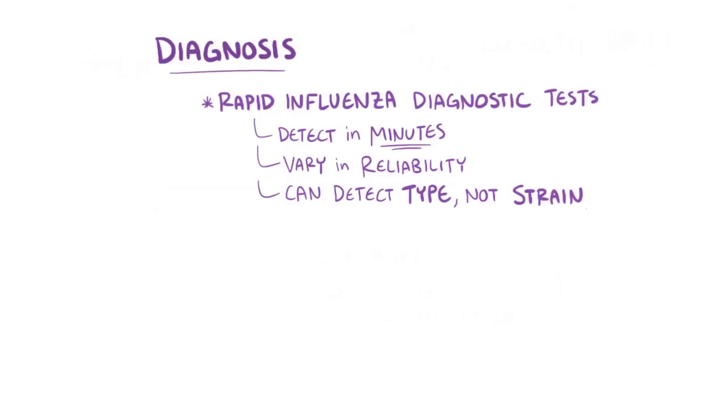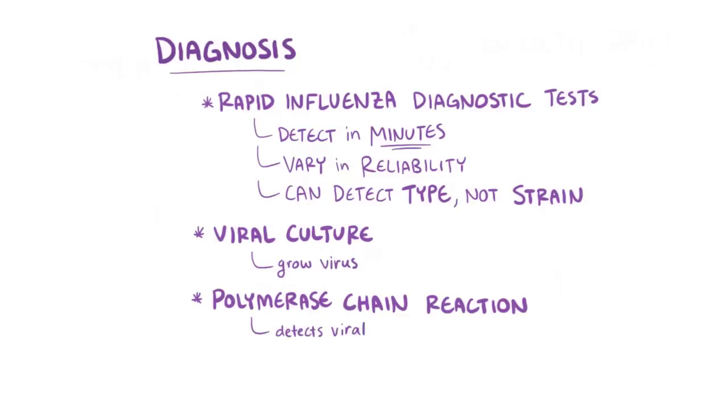There are two more accurate and reliable ways to identify influenza. The first is a viral culture, which involves growing the virus and identifying it, and the second is to use polymerase chain reaction to detect even a tiny amount of viral RNA.